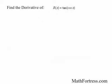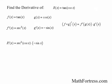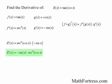Let's try the next example. Find the derivative of r of x equal to tangent of cosine of x. This is a composition of functions — the outer function is tangent of x and the inner function is cosine of x. In order to use the chain rule, the derivative of f of x is secant squared of x, and the derivative of g of x is negative sine of x. Applying the chain rule, the derivative of r of x equals secant squared of cosine of x times negative sine of x, which simplifies to negative sine of x times secant squared of cosine of x.